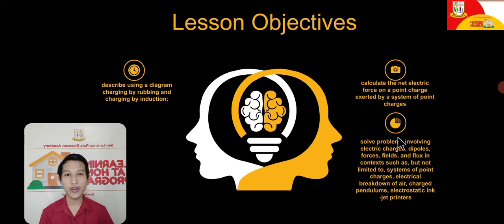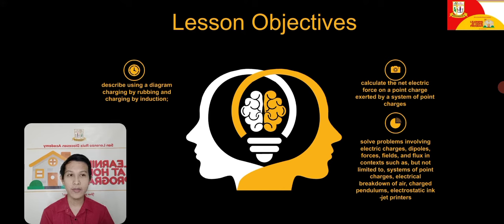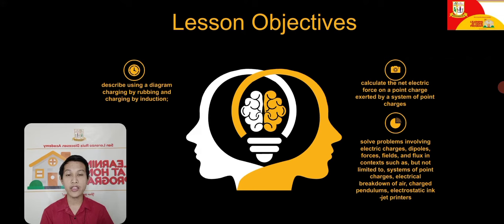For this lesson, you will learn three different objectives. Number one: describe using a diagram charging by rubbing and charging by induction. Number two: calculate the net electric force on a point charge exerted by a system of point charges. Number three: solve problems involving electric charges, dipole forces, fields, and flux in contexts such as, but not limited to, systems of point charges, electrical breakdown of air, charge pendulums, and electrostatic inkjet printers.